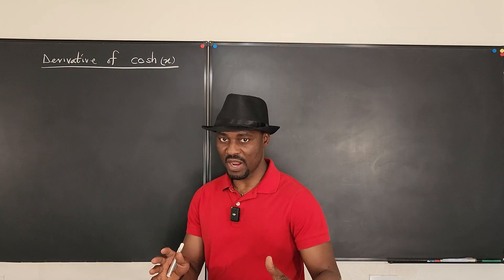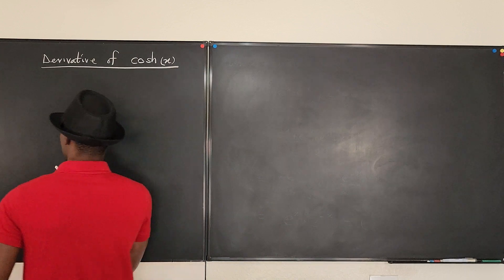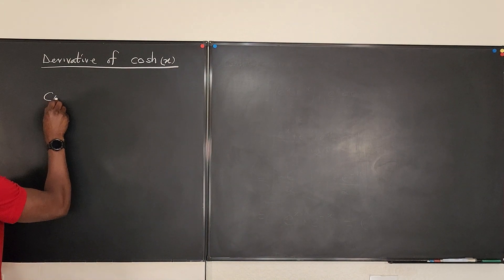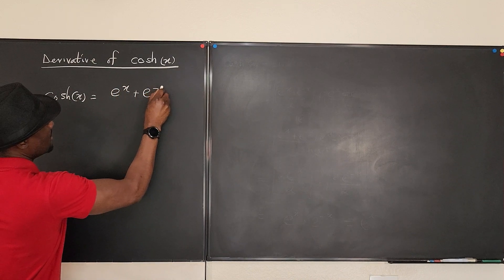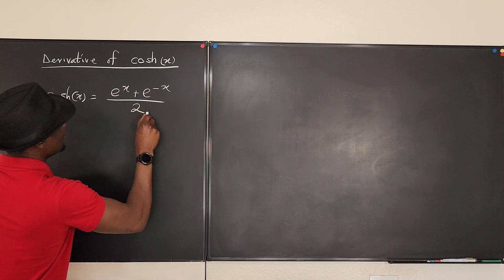The first thing we do is write the definition. We say that cosh x equals e^x plus e^(-x) over 2.